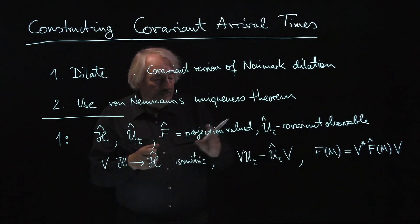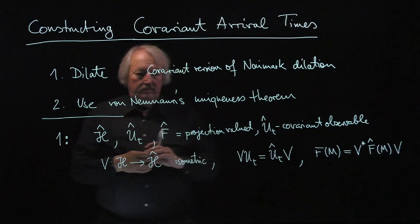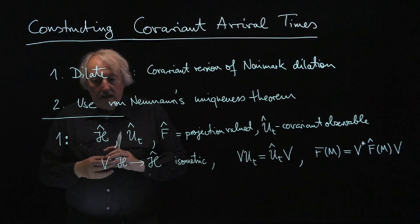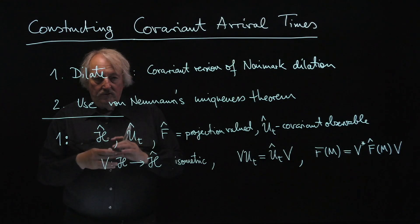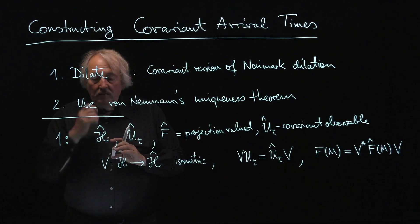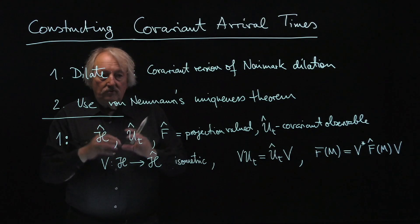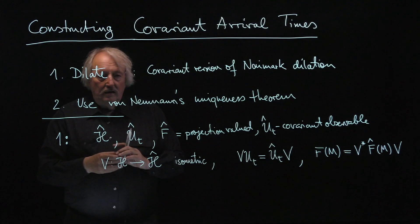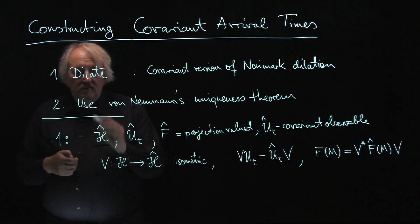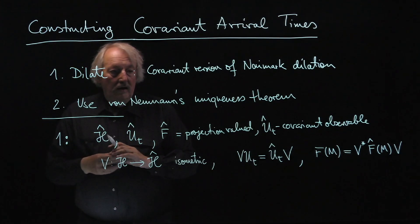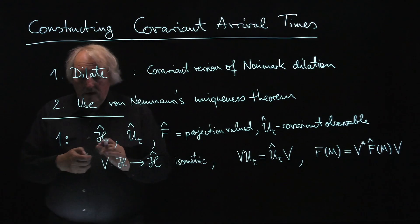If you leave out anything related to covariance and the unitary group, what was just written down is Neumark's dilation theorem — one of the first dilation theorems. It's easy to verify that this construction naturally has the property that the unitary symmetry at the F level becomes a symmetry at the dilated level. Now we have a û_t-covariant projection-valued observable. That means everything from the first overview lecture about Pauli's argument now applies. For this guy it's actually just a canonical pair of variables, and this is the content of von Neumann's uniqueness theorem.